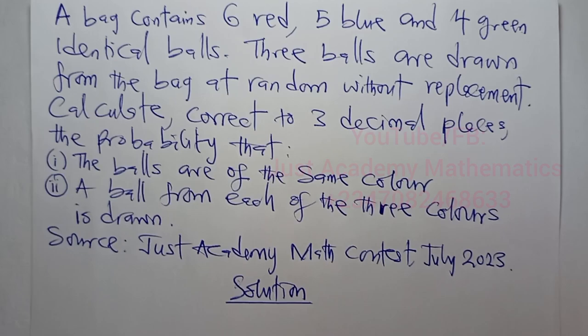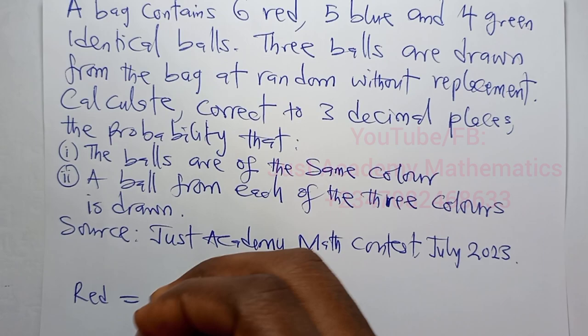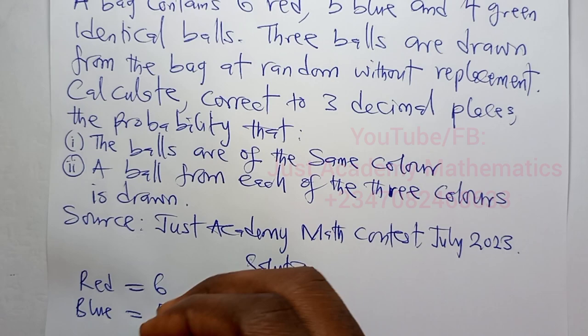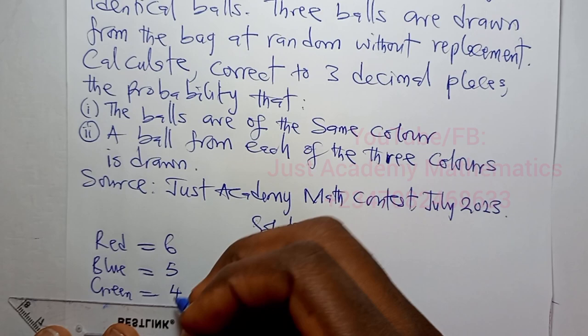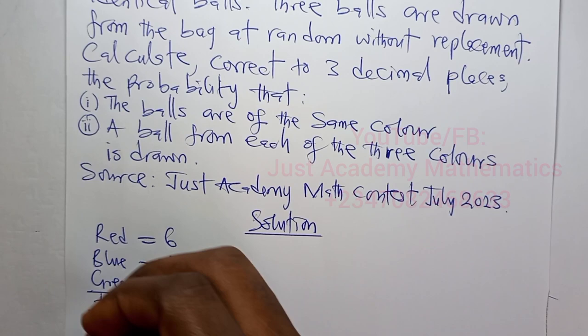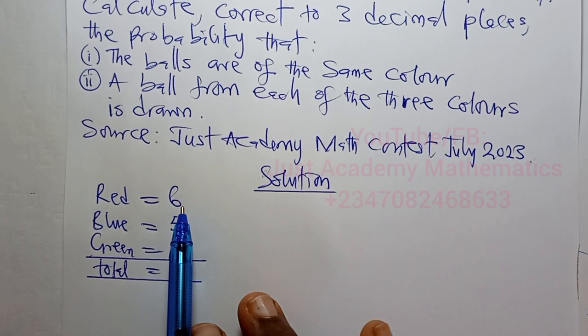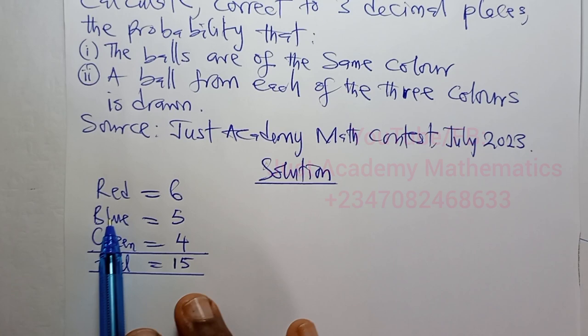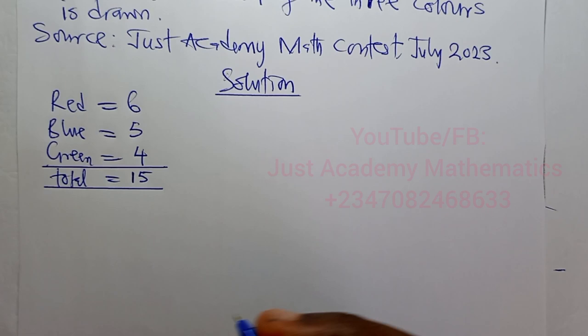Let's work through this. We have red balls: 6, blue balls: 5, and green balls: 4. So the total number of balls is 15 — that is 6 plus 5 plus 4 equals 15. So the probability of red is 6 over 15, probability of blue is 5 over 15, and probability of green is 4 over 15.